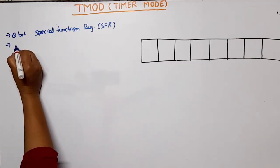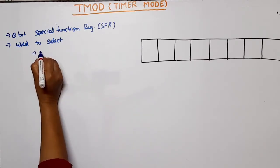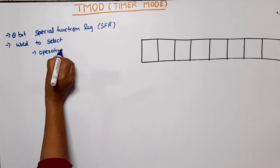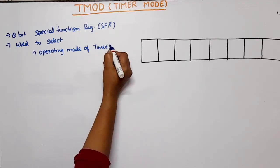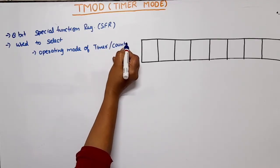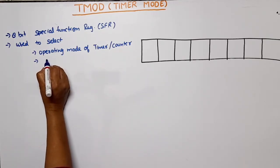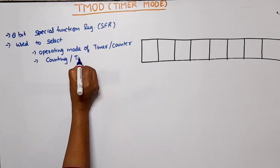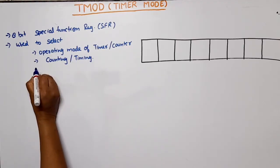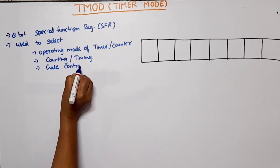What is the function of this? This is basically used to select the operating mode of timer or counter. Whether the timer or counter work as a counter or timer, this selects counting or timing. Third is gate control.